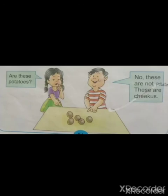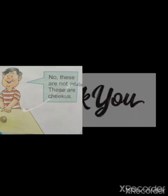Are these potatoes? The girl is asking a question: Are these potatoes? Now the boy is giving an answer: No, these are not potatoes. These are chikos. So children, read this chapter again with the help of your parents and discuss these questions with them. Thank you.